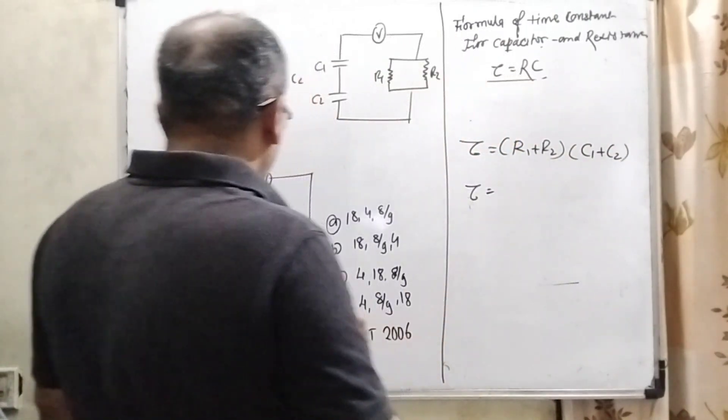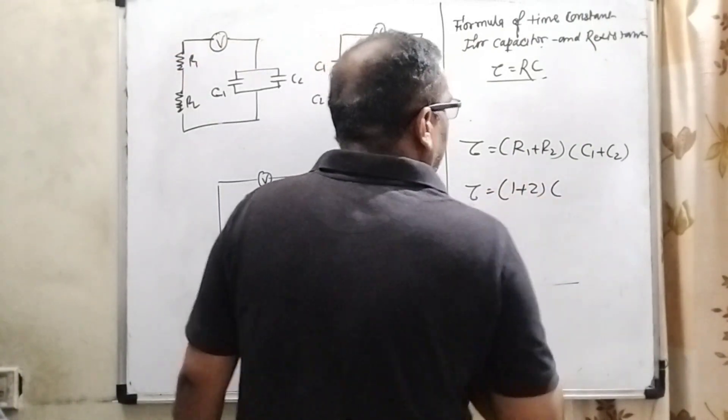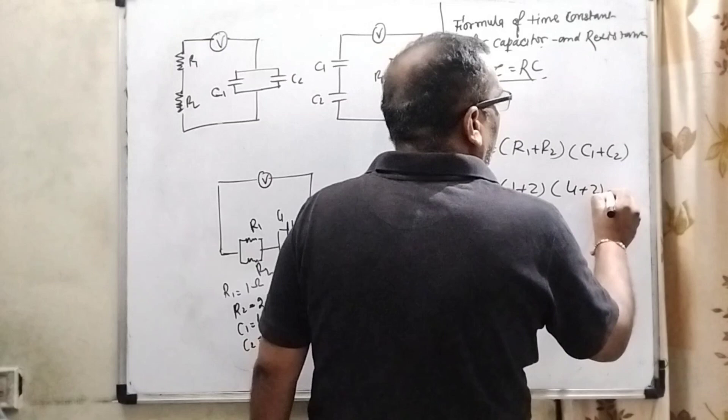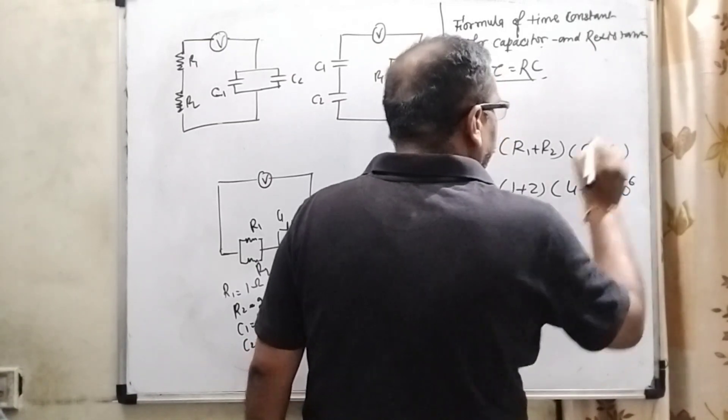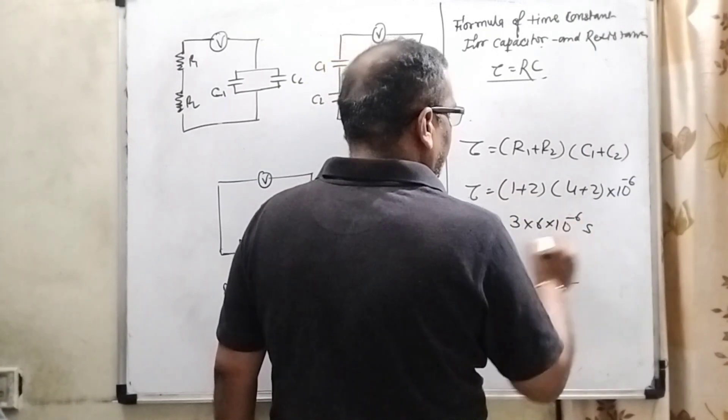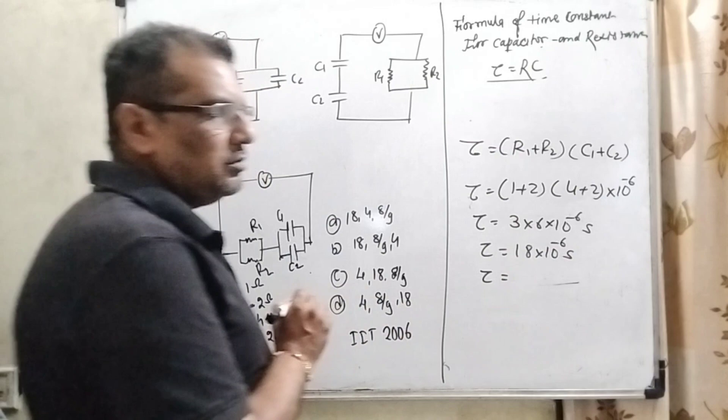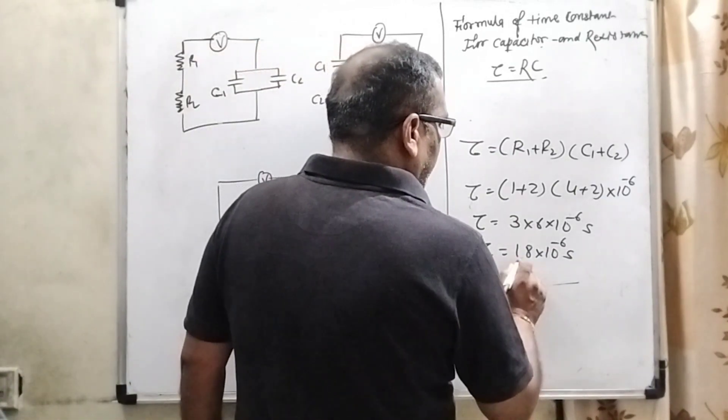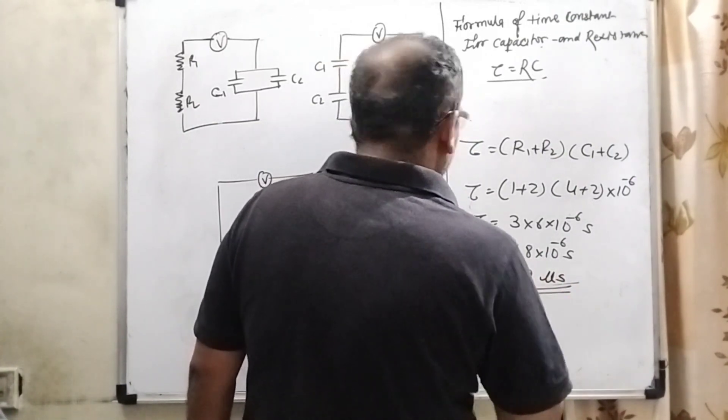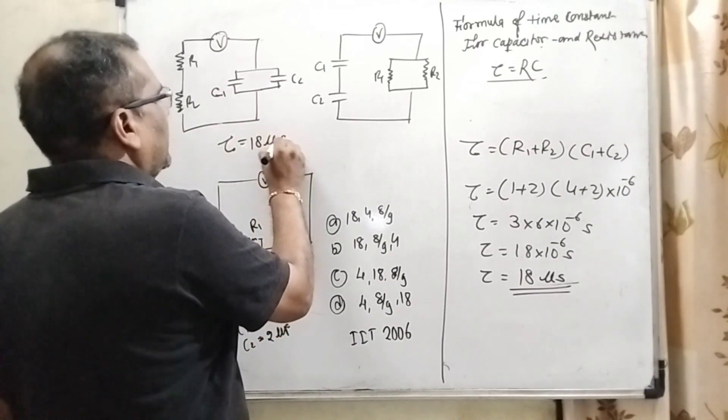Now substitute the value according to the given. R1 and R2 is 1 and 2 ohm, so 1 plus 2. And the capacitance is 4 microfarad and 2 microfarad. Convert to farad, multiply 10 to the power minus 6. 3 and 4 into 6, 10 to the power minus 6 seconds. Tau equal to 18 into 10 to the power minus 6 seconds. Convert to microseconds, that is 18 microseconds. For the first diagram, tau is 18 microseconds.